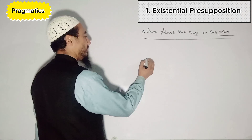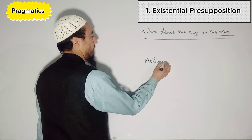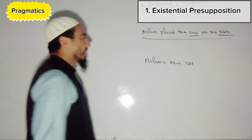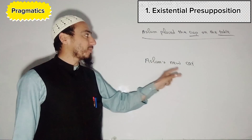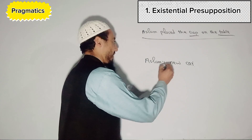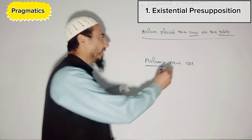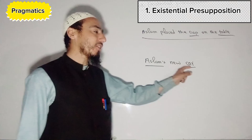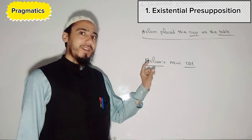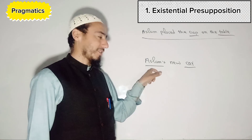Another example: 'Aslam's new car.' The existential presupposition of this utterance is that Aslam is an entity who has a car — Aslam exists and the car exists. So Aslam also exists and the car also exists. That is the existential presupposition of 'Aslam's new car.' Hope that this topic is clear to you.